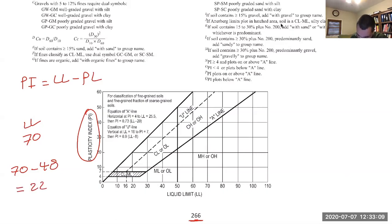Now we can enter the chart because we have the liquid limit and we have the plasticity index. Remember this chart is for fine-grained soils. We go from the X-Y axis straight with a straight line and then from the 70, which is our liquid limit given in our question.